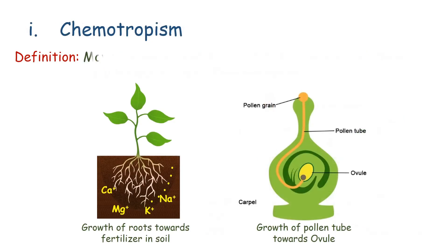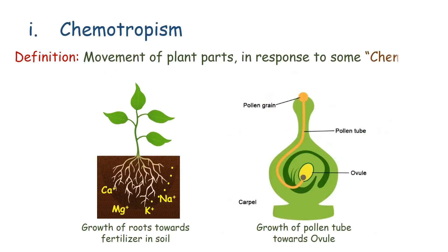Movement in response to some chemicals is called chemotropism. Growth of roots towards fertilizer in soil and growth of pollen tube towards ovule are both examples of chemotropism.